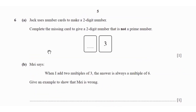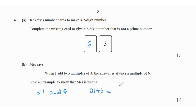Question 6: Jack uses number cards to make a two-digit number. Complete the missing card to give a two-digit number that is not a prime number — that's going to be 63. Then Mae says when you add two multiples of 3, the answer is always a multiple of 6. Give an example to show Mae is wrong. Multiples of 3 can be 21 and 6. 21 + 6 = 27, which is not a multiple of 6, so Mae is wrong.